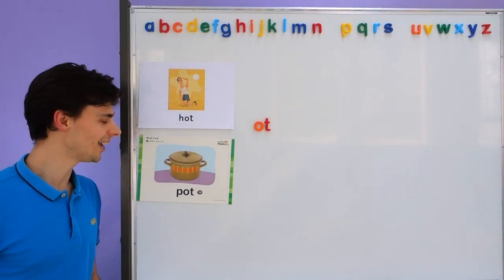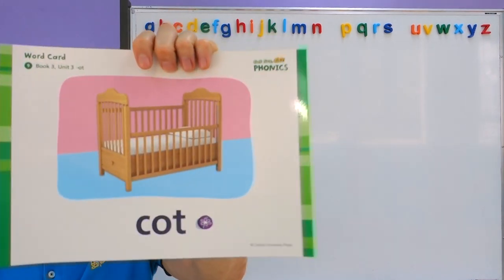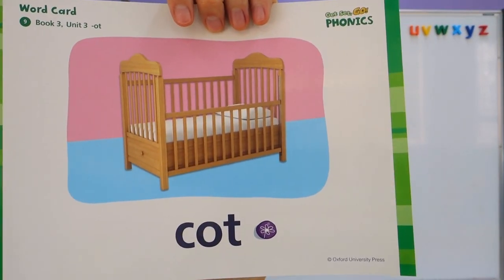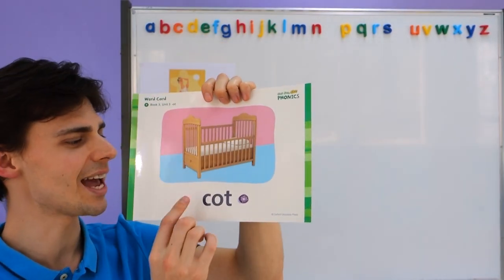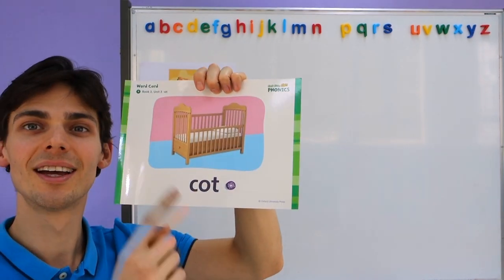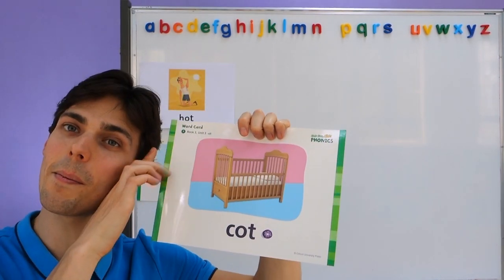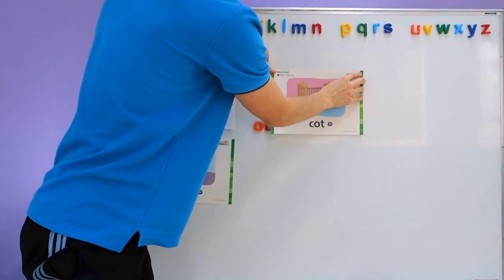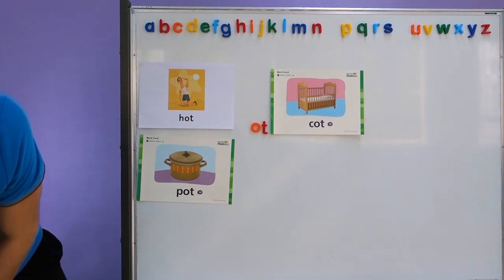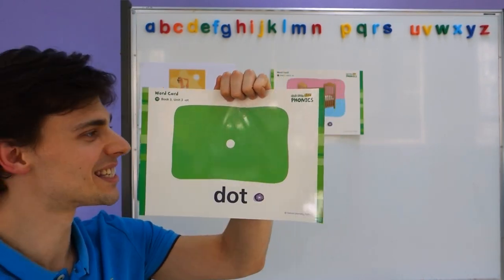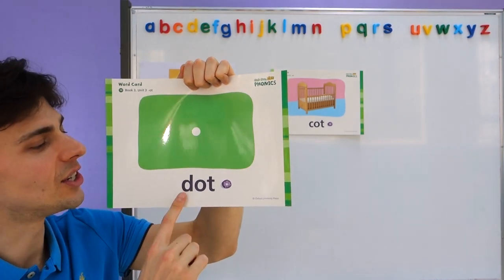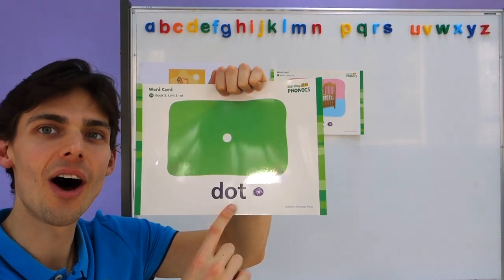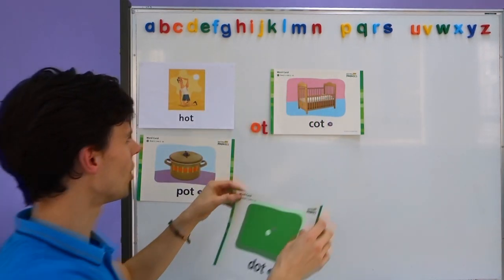What other "-ot" words are we learning today? What is this one? This is where the baby sleeps. The baby sleeps in this one. This is a C-ot, cot. C-ot, cot. Where the baby sleeps. And the last one we are doing is this one. What is this? This is a dot. D-ot, dot. It's just a small mark. We call that a dot.